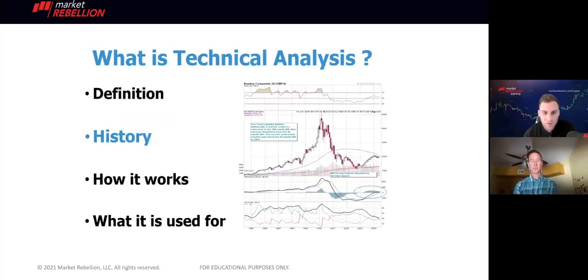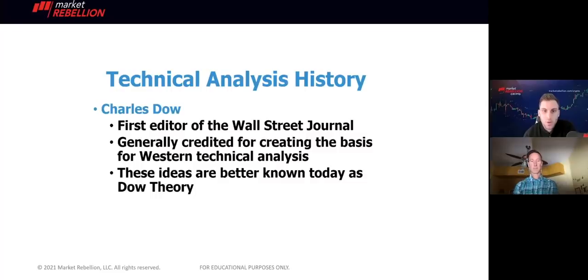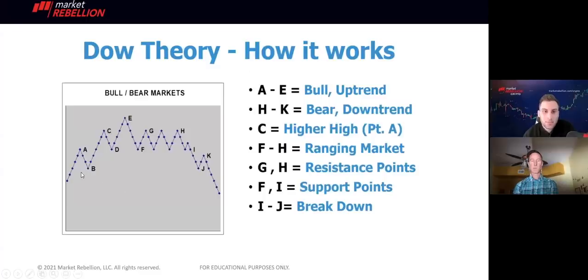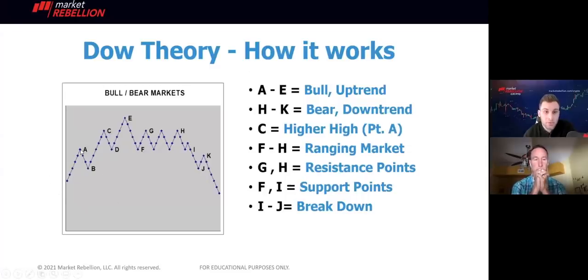Let me give you a brief history. Technical analysis was first created by Charles Dow, who was the first editor of the Wall Street Journal. These ideas are generally known as Dow Theory. Dow Theory is essentially a string of movements — we have bulls and we have bears. A bull market refers to increasing prices, while a bear market refers to decreasing prices. Within these moves, we have higher highs and lower trends, which consist of higher lows or lower highs.